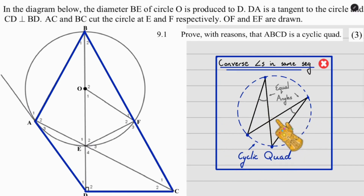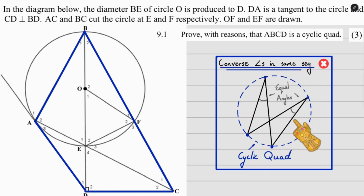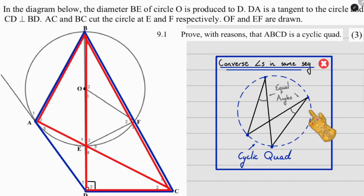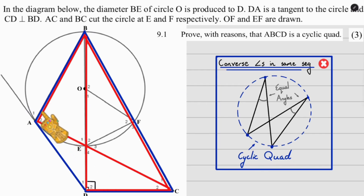I'm going to use the bowtie — angles in the same segment, nicknamed the bowtie. I've highlighted the bowtie in red. They told us that angle D2 is 90, so I already have one angle from the bowtie. If I prove that A2 is also 90, then it's a cyclic quad.